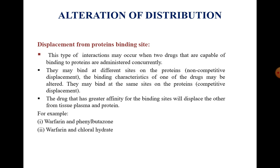Alteration of drug distribution: displacement from protein binding sites. This type of interaction may occur when two drugs that are capable of binding to proteins are administered concurrently. They may bind at different sites on the protein, which is called non-competitive displacement, or the binding characteristics of one drug may be altered. They may bind at the same sites on the protein, which is called competitive displacement.